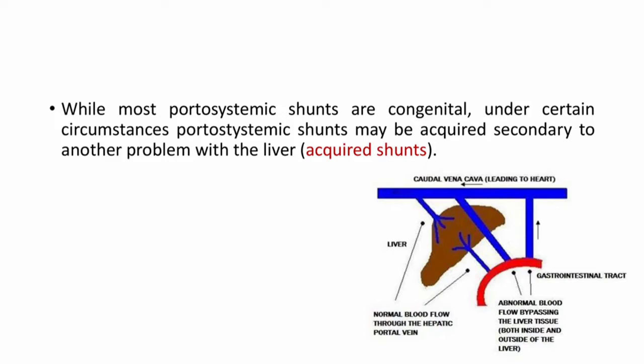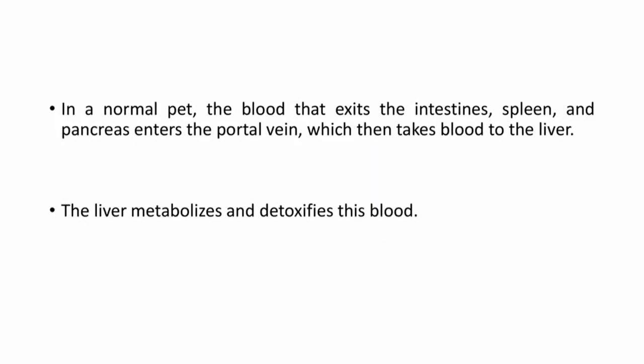While most portosystemic shunts are congenital, under certain circumstances portosystemic shunt may be acquired secondary to another problem with the liver — that is called acquired shunt. This picture represents a normal circulation with normal blood flow through the hepatic portal vein, getting filtered and passed through the caudal vein and cava leading to the heart, and also shows extrahepatic and intrahepatic shunt. In a normal pet, the blood that exits the intestine, spleen and pancreas enters the portal vein which then takes the blood into the liver, where it is metabolized and detoxified.